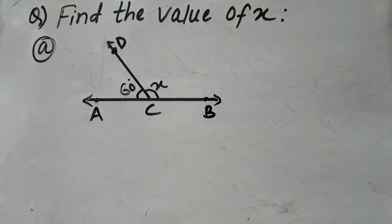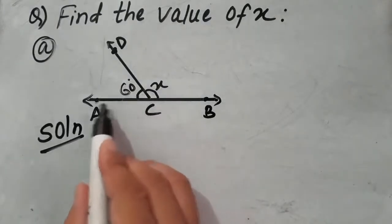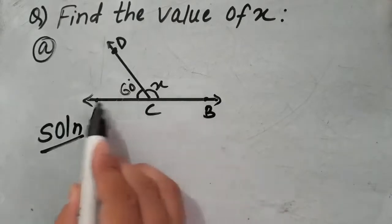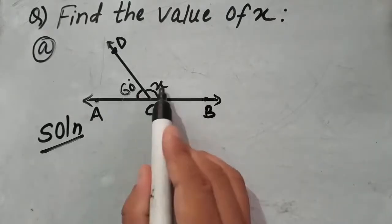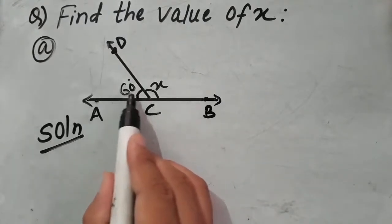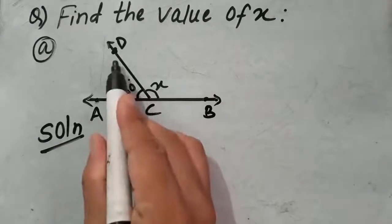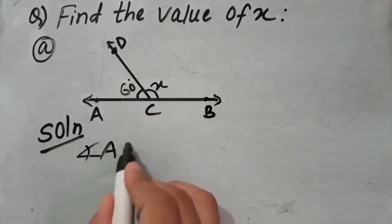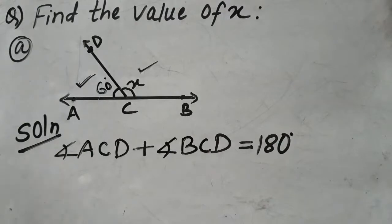So let's solve this equation. Let's write the solution first. Now students, here we can see two angles formed over this straight line. I have two angles — one is 60 and another is x. Now, what is the name of this angle? Angle ACD. Angle ACD is representing 60 degrees. So students, let's write the reason why the sum of these two angles is 180 — it being a straight angle.